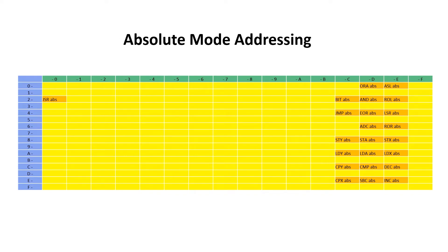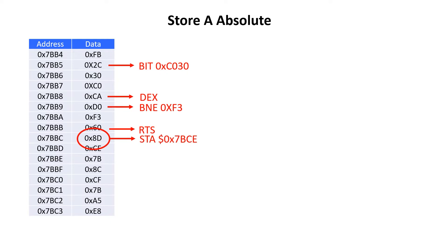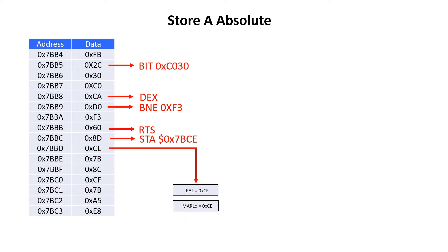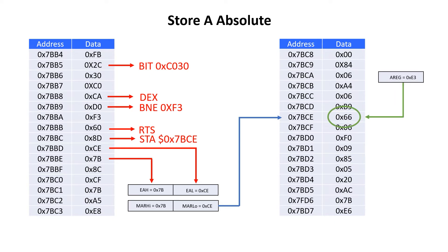Here we can look at the instructions that use absolute addressing — we've already seen the jump instruction. For the store A instruction in absolute mode, the opcode is 8D. We can see an 8D at address 7BBC. The address is in the two bytes immediately after the opcode. We want the CE at location 7BBD to go into the EAL variable, reflected in the MAR low flip-flops, and the 7B at 7BBE to go into EAH, reflected into MAR high. Then we take the value E3 in the accumulator and store it at memory location 7BCE.